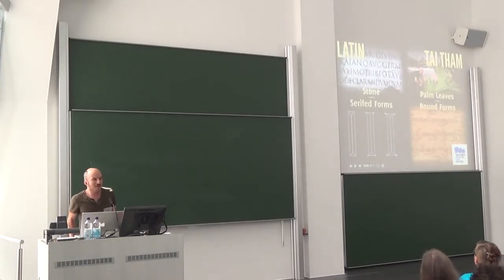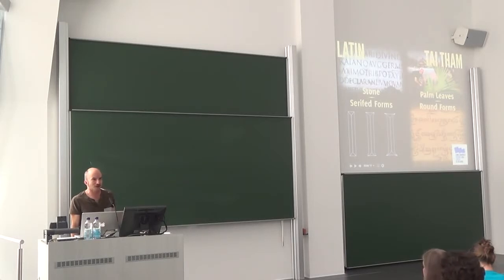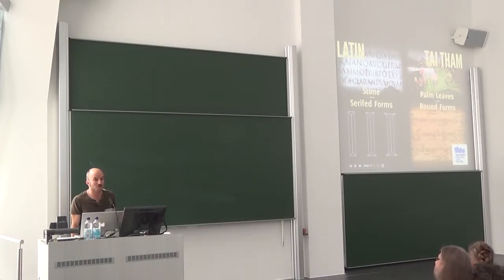If we think about it, the materials and the tools that we use to create letters influence the shape of those letters. So if we were designing a Latin font, for example, ultimately serifs are an artifact of inscribing capital Latin letters in monumental stone. So if I was designing a traditional Latin font, I might want to draw inspiration from Trajan's column, which is shown here.